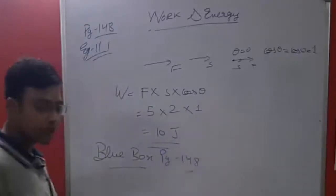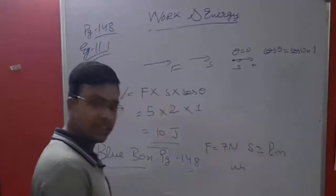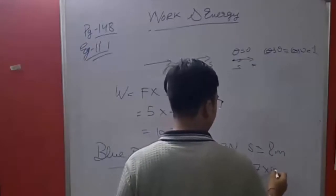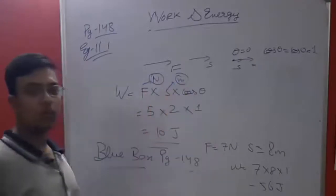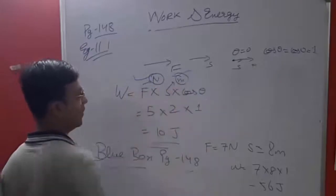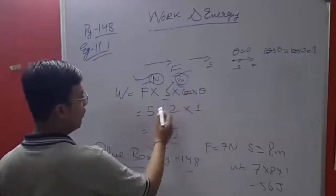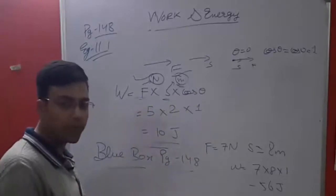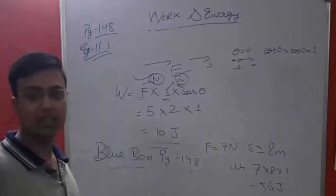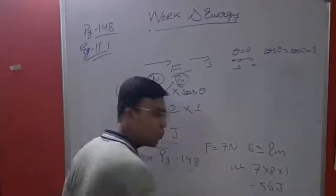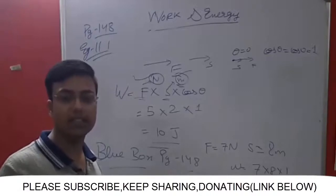There is also a blue box question on page 148. Force given is 7 newton, displacement is 8 meters, and it is in the same direction — so cosθ = 1. Work done = 7 × 8 × 1 = 56 joules. Remember to always write the unit. The force unit is newton and displacement unit is meter, so work done is always in joules.